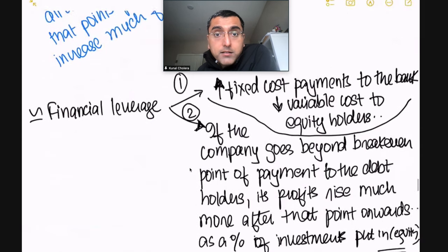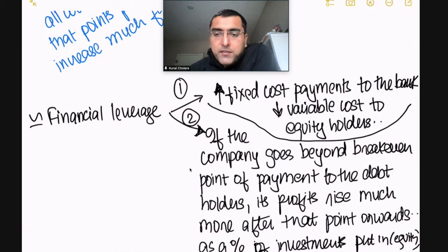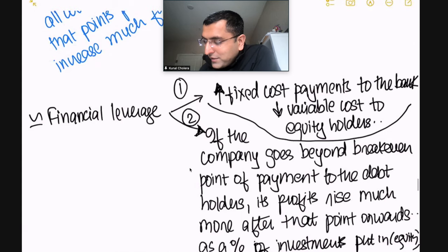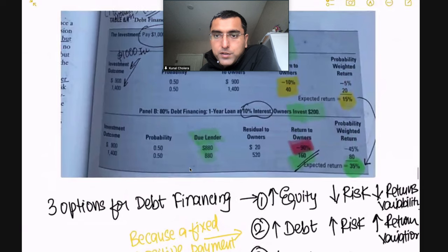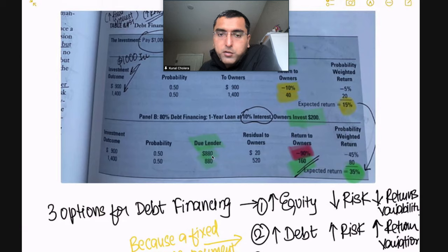Financial leverage is similar in principle to operating leverage. You're replacing your variable cost as an owner with fixed debt payments to the bank. If the company goes beyond the break-even point after financial leverage — meaning it has serviced its debt obligations — all remaining money goes to shareholders. That's the 160% upside we saw in the table, versus the 40% in the unlevered case. You've added a fixed cost in the form of debt, and returns become more and more variable as a result.